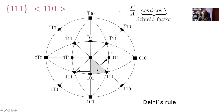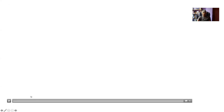An easy way to find the operative slip system is Deel's rule: take the tensile axis, go to the nearest slip direction and reflect it through the opposite side of the triangle to get the correct slip direction. Similarly, go to the nearest close-packed plane and reflect through the opposite side to get the correct slip plane. A movie demonstrates why Deel's rule actually works.